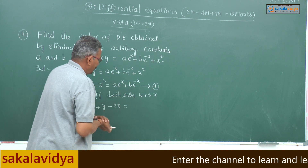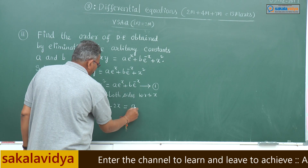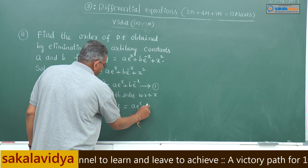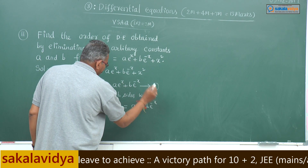So after the first differentiation, we have x(dy/dx) + y - 2x = ae^x - be^(-x).